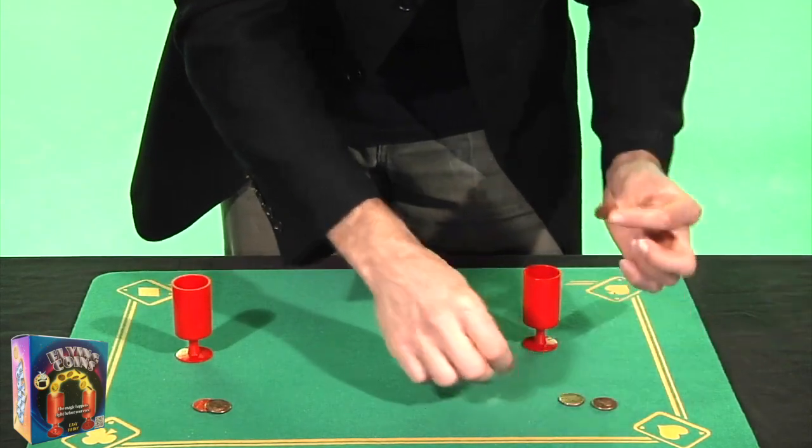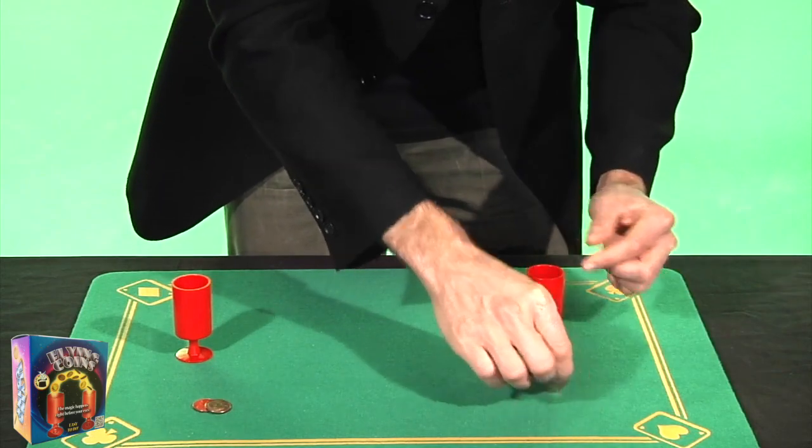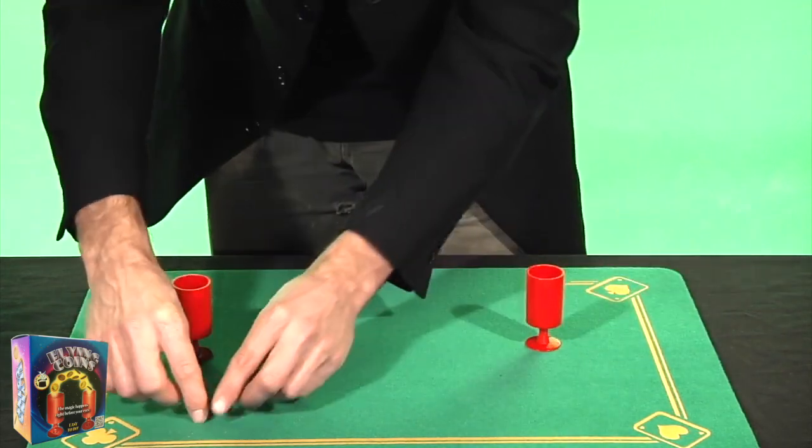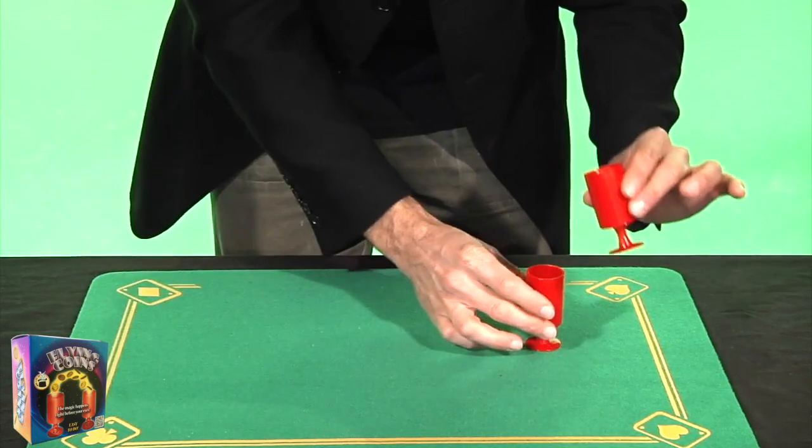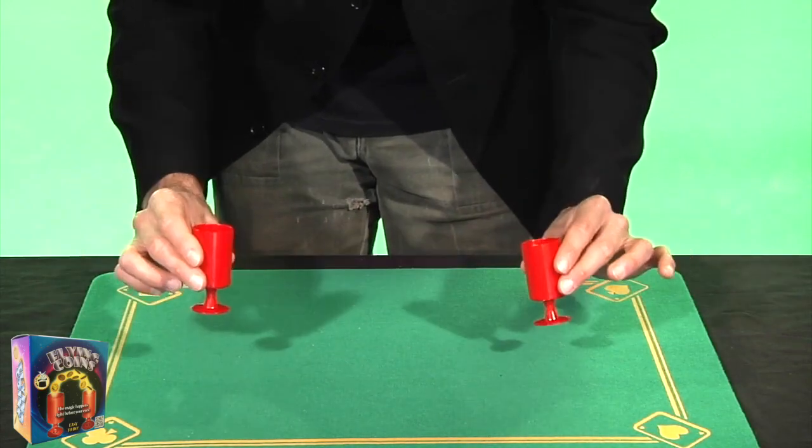Okay, so one, two, three, and four coins in this cup, and one and two coins in this other cup. So, two coins and four coins.